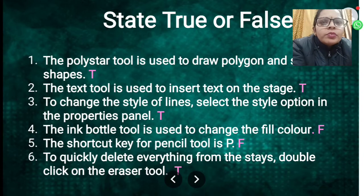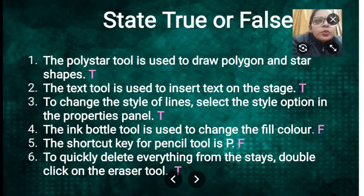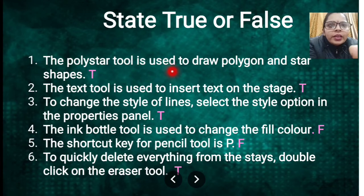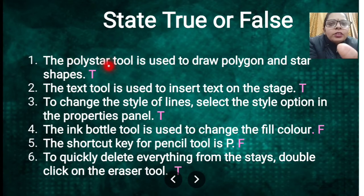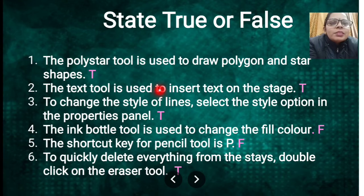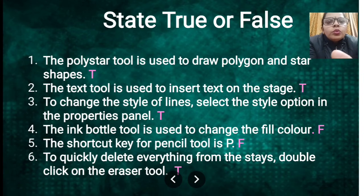Now state true and false. First: the Poly Star tool is used to draw polygon and star shapes — yes, we use the Poly Star tool for polygon and star shapes, so the answer is True. Second: the Text tool is used to insert text on the stage — just as we do in Paint, we use the Text tool, and in Animate CC we also use the Text tool, so the answer is True.